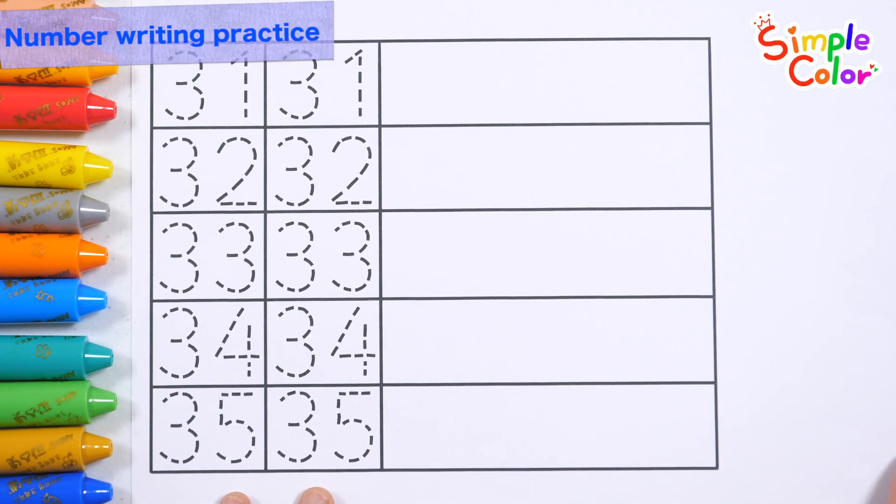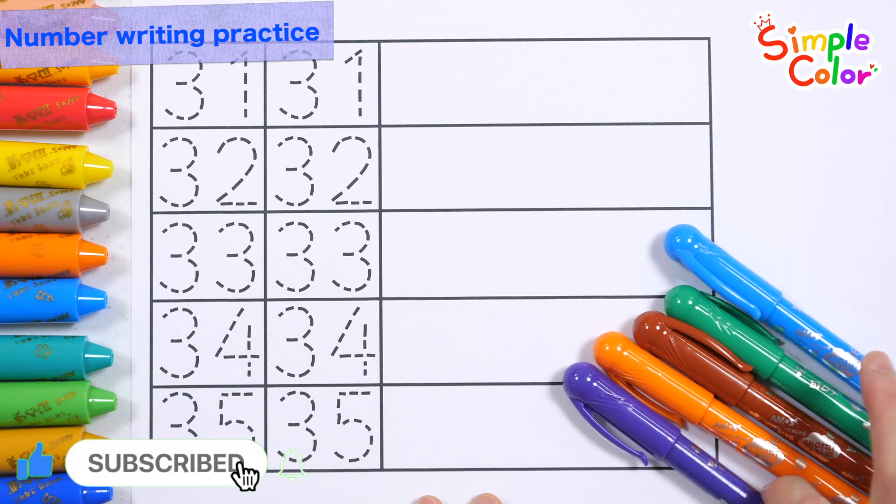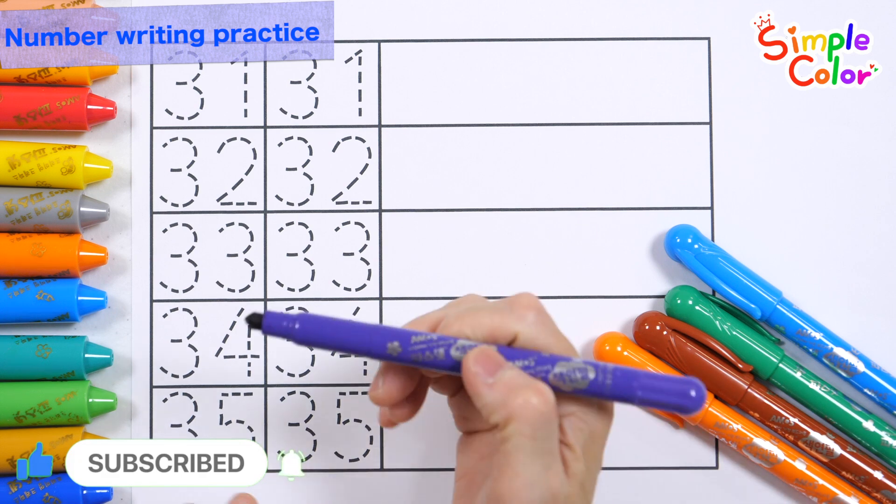Today, let's learn the numbers 31 to 35. Let's write numbers along the dotted lines with five different colored pencils.